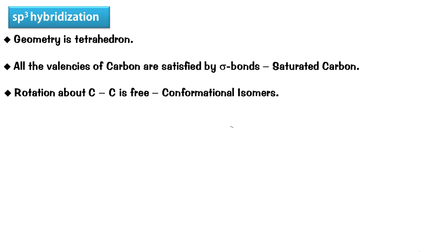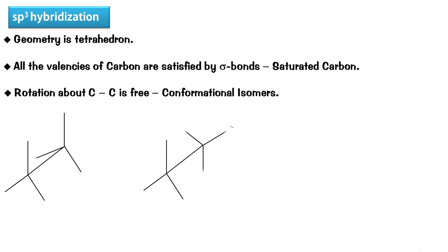Basically, isomers are those in which two compounds having some different properties have the same molecular formula - it is like two different people having the same name; there is actually no connection between the two. Conformational isomers are very specific isomers quite often found in saturated systems. Around a carbon-carbon single bond, the rotation of the groups is free. For example, ethane can be found in two distinct opposite ways: the eclipsed conformation and the staggered conformation. This particular way of denoting the molecule is called the sawhorse projection.